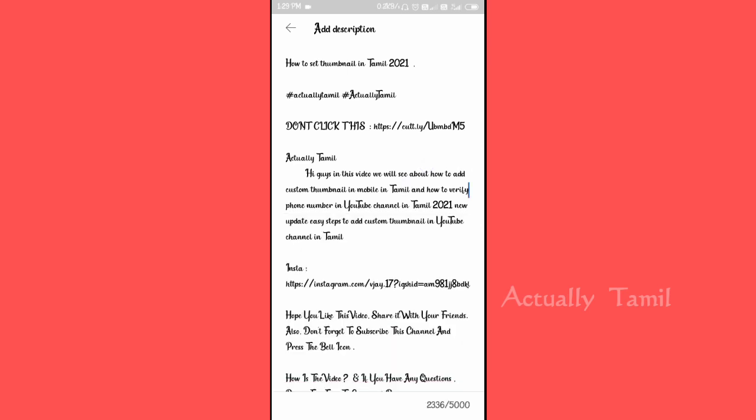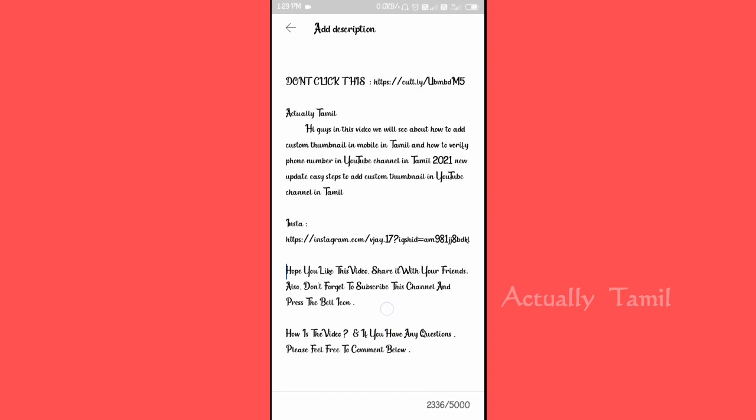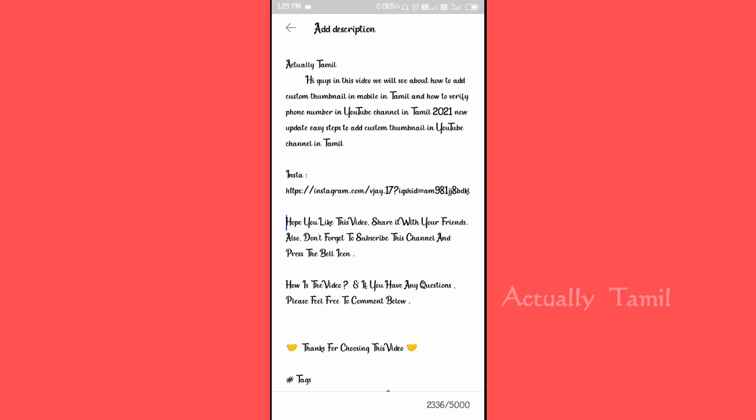You can type in the title horizontally. You can select how to add a custom thumbnail in mobile, so you can post this video and add a custom thumbnail.